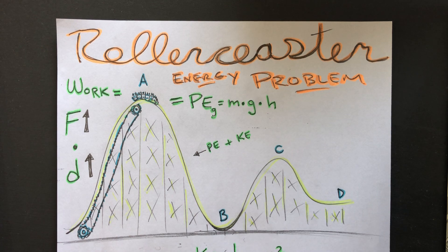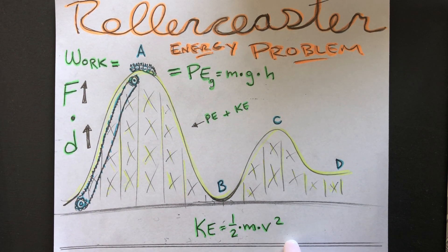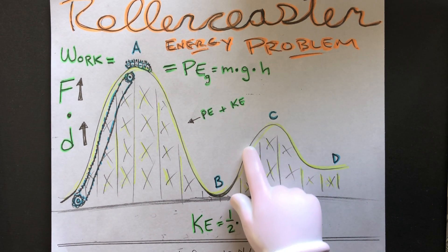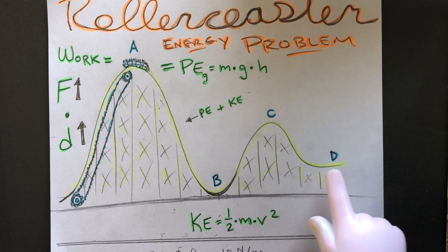Down here at B it would be all kinetic energy, one half mv squared at the bottom, and then it would start to lose kinetic and gain potential as it moves through the coaster.